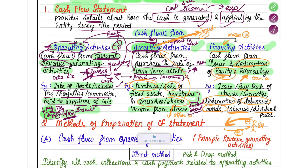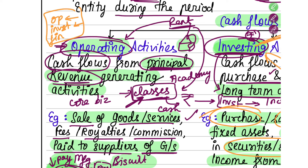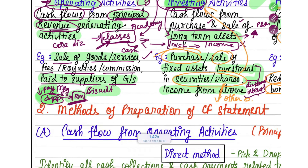So the three activities are: operating activities, which relate to principal revenue generating activities; investing activity, which relates to purchase and sale of long-term assets and investments; and financing activity, which relates to issuing and redemption of equity and borrowings. Once you understand these three activities, preparing a cash flow statement becomes much easier.